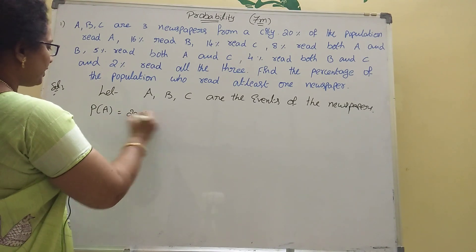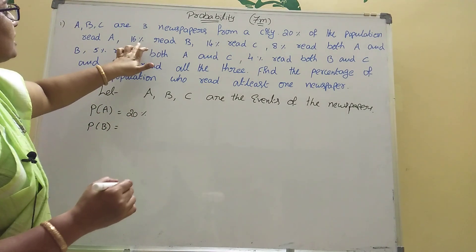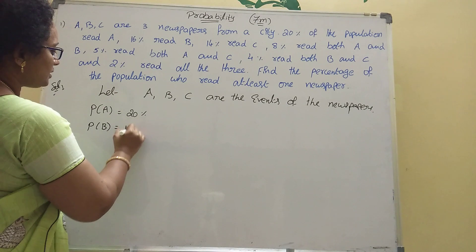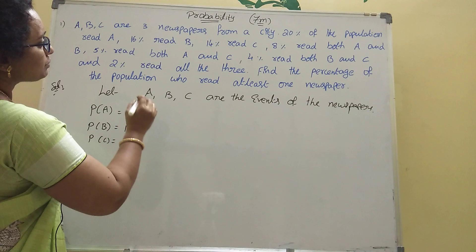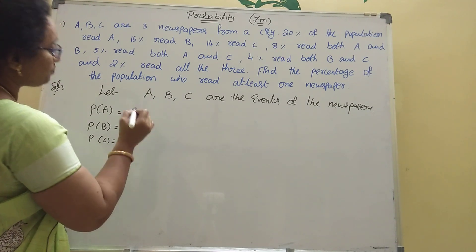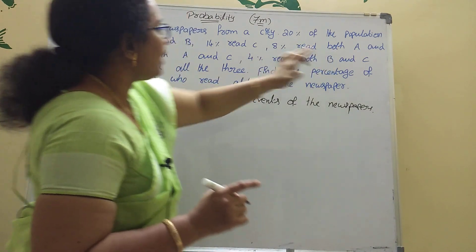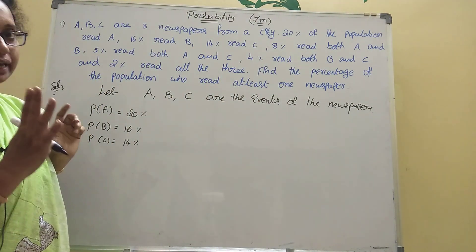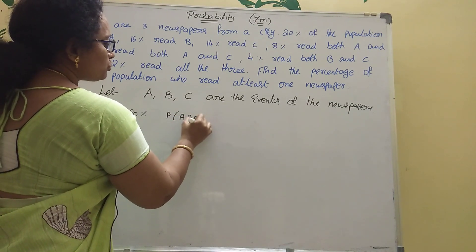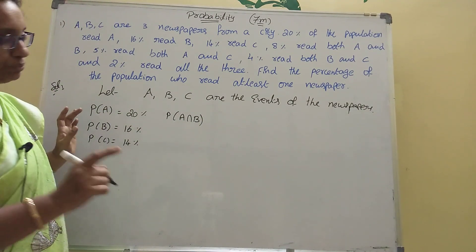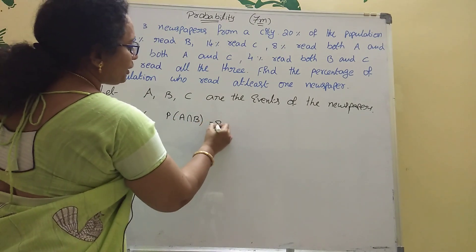P of A is 20%. P of B is 16%. P of C is 14%. 8% read both A and B, so P of A intersection B is equal to 8%.